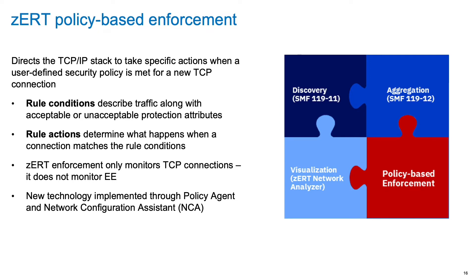ZERT enforcement enables the TCPIP stack to act on the data collected by ZERT for real-time notifications and defensive actions if configured in a policy. ZERT enforcement policy rules describe acceptable or unacceptable cryptographic protection attributes for TCP connections and the appropriate actions to take when a connection matches the rule. For example, if you describe acceptable protection, the action may be to allow the connection. If you describe unacceptable protection, the action may be to log to syslogd or write an audit record. Note that ZERT enforcement does not apply to enterprise extender traffic — only TCP connections. This is implemented in Policy Agent, and the Network Configuration Assistant guides you through building ZERT policies.